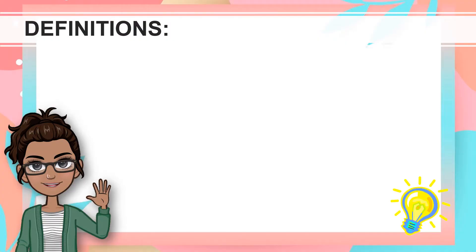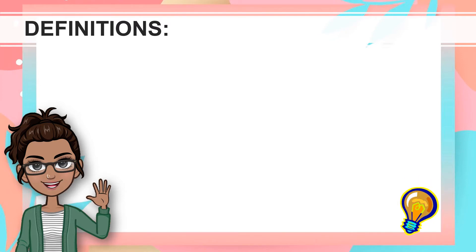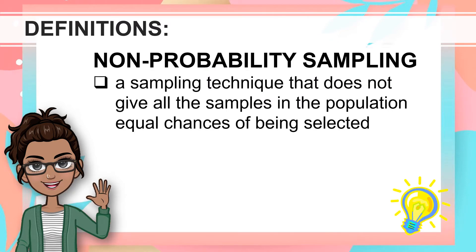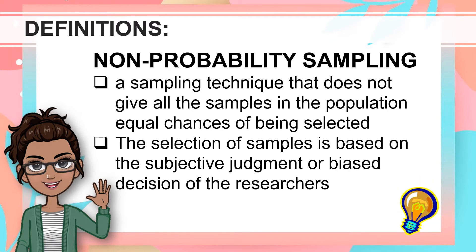There is a time when a researcher encounters some hindrances in his or her research, where it is not possible to draw random probability sampling due to lack of time or budget. This is where non-probability sampling can be useful. If probability sampling gives an equal chance of selection to all members of the population, non-probability sampling is a sampling technique that does not give all the samples in the population equal chances of being selected. The selection of samples is based on the subjective judgment or biased decision of the researchers, according to Faltado et al., 2017.